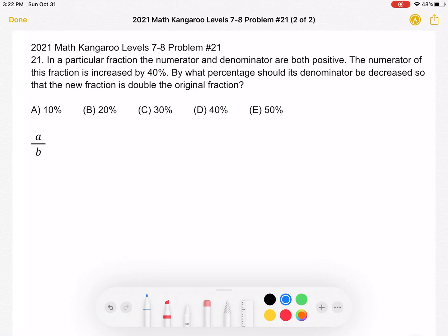So let's start with our fraction. And we can have that fraction be equal to A over B. So A is the number in the numerator and B is the number in the denominator, which we are told are both positive.